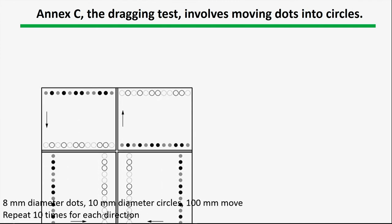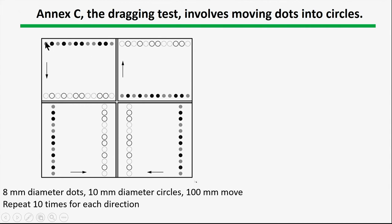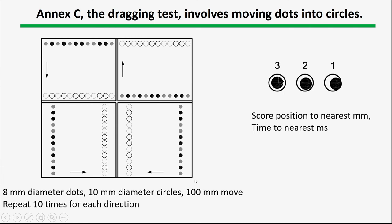Annex C is a dragging task involving moving dots to circles. There are a series of circles and dots, and the user's task is to take a dot, drag it to a circle, then move to the next one, and repeat for downward, upward, rightward, and leftward movements — again, to capture movements in all directions. The dots are 8 millimeters, the circles are 10 millimeters, and the movement distance is 100 millimeters. The task is repeated 10 times in each direction. Scoring assigns a 3, 2, or 1 based on whether the dot lands inside, touching, or outside the circle, along with time to the nearest millisecond.